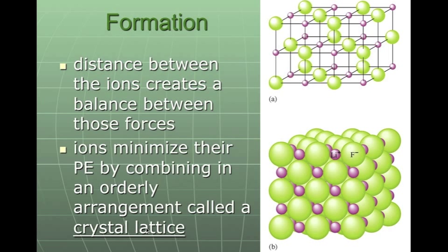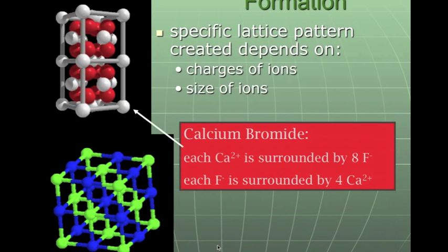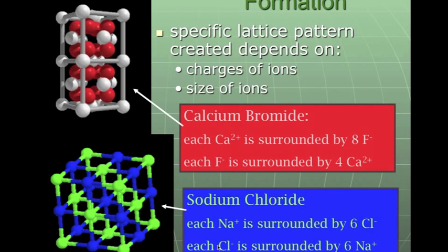When they're in a crystal lattice, the ions minimize their potential energy, so they are the most stable, and they combine in a very orderly arrangement. In this orderly arrangement, the green dots are going to be fluorine, and they're going to be negative. The purple dots are lithium, and it's positive. We see that around this lithium, it is surrounded by negatives because the positives are attracted to the negatives. They line up in a very organized fashion, which is a crystal lattice. When they form and line up, they do this in a very specific pattern, and it all depends on the charges of the ions and the size of the ions.